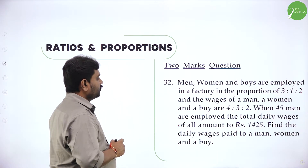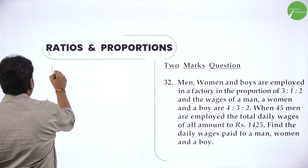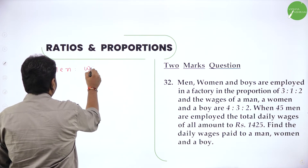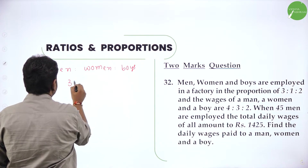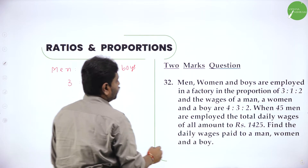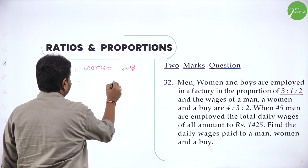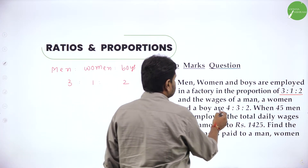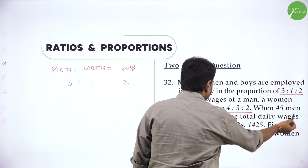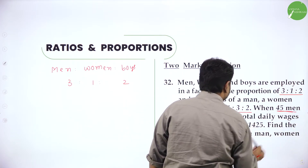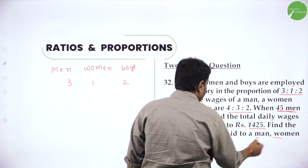Let us start with the second problem. Men, women and boys are employed in a factory in the ratio 3 is to 1 is to 2. Wages of man, woman and boy are in the ratio 4 is to 3 is to 2. 45 men are employed. Total wages are ₹1,425. Find the daily wages paid to man, woman and boy.